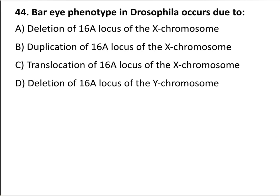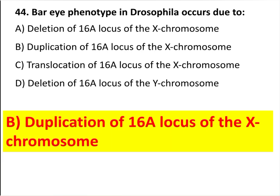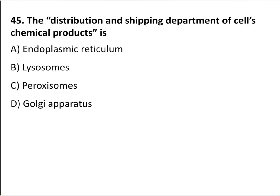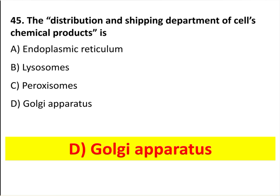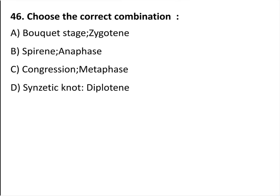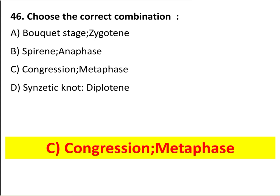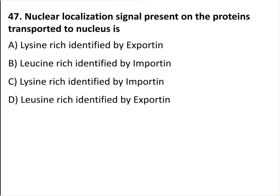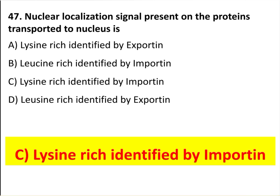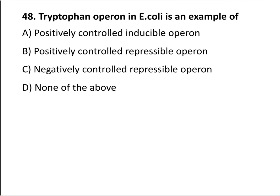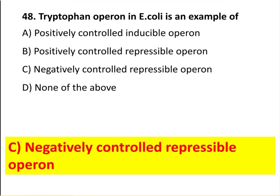Bar-eye phenotype in Drosophila occurs due to duplication of the 16A locus of the X chromosome. The distribution and shipping department of the cell is the Golgi apparatus. Choose the correct combination — congression occurs at metaphase. Nuclear localization signal present on proteins transported to the nucleus is lysine-rich. Tryptophan operon in E. coli is an example of a negatively controlled repressible operon.